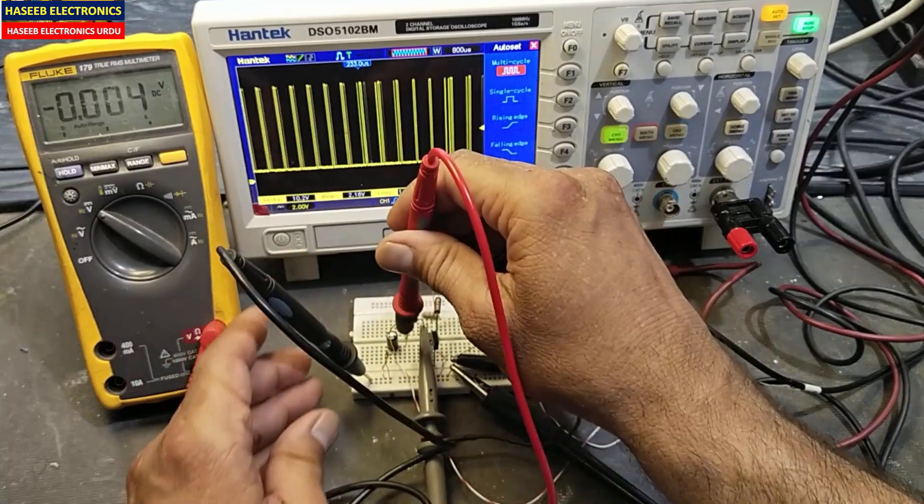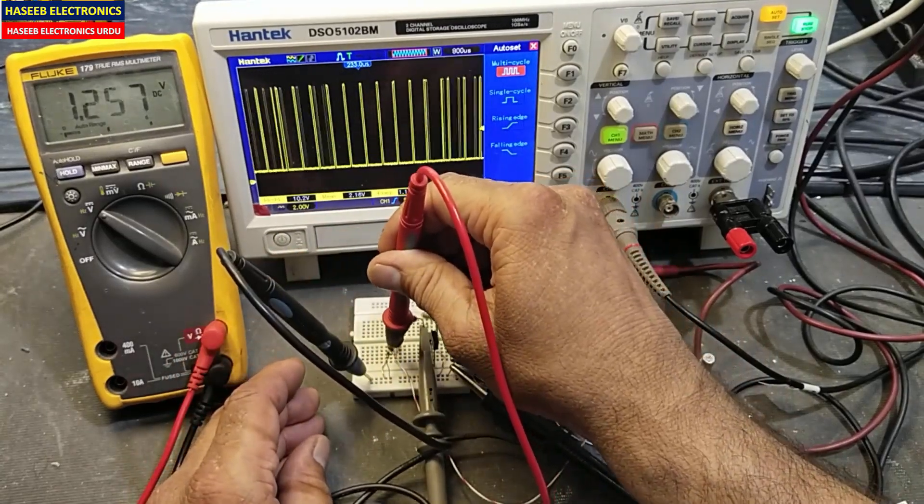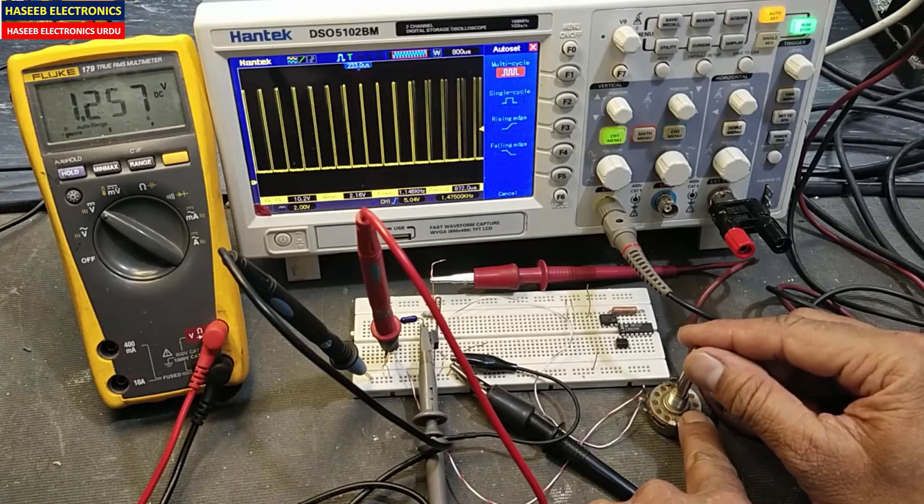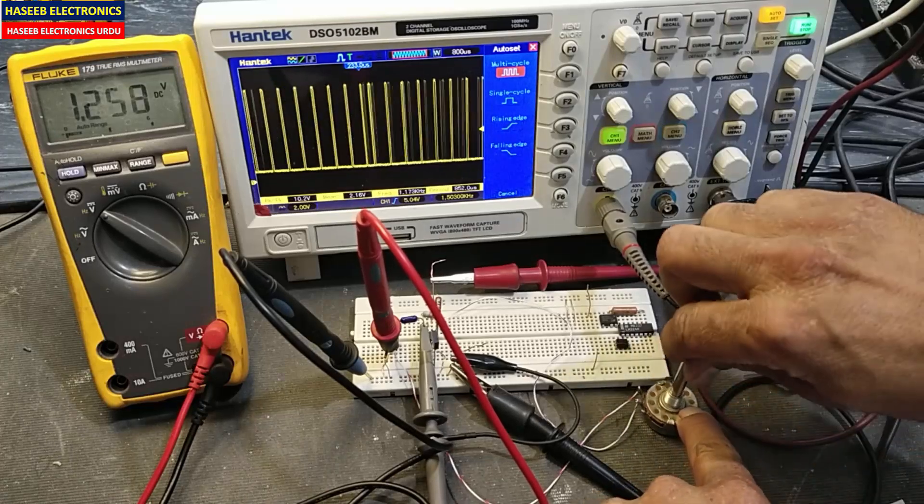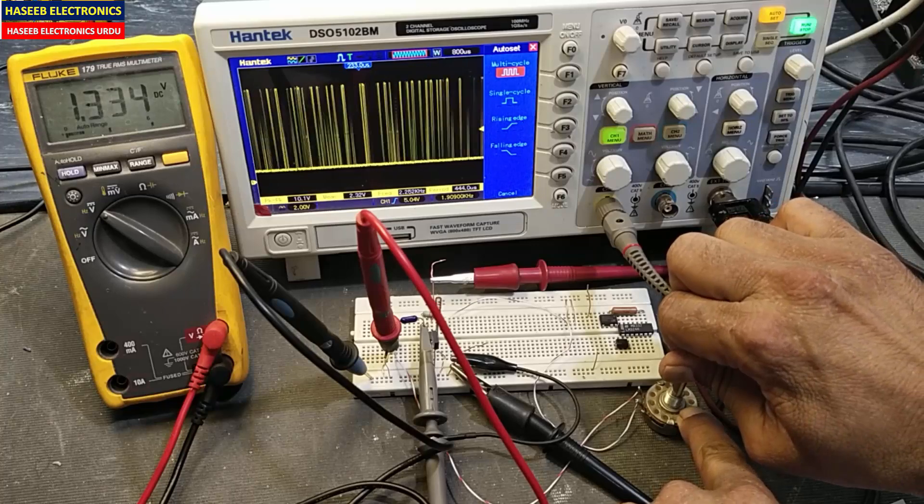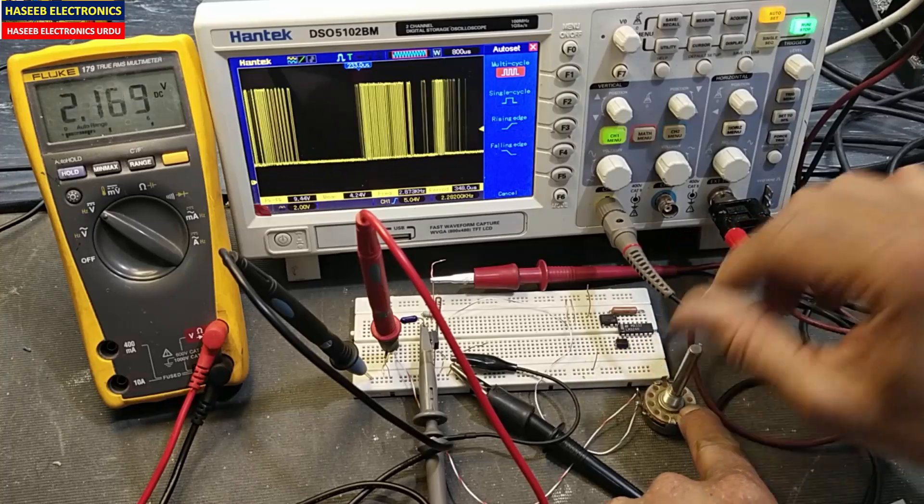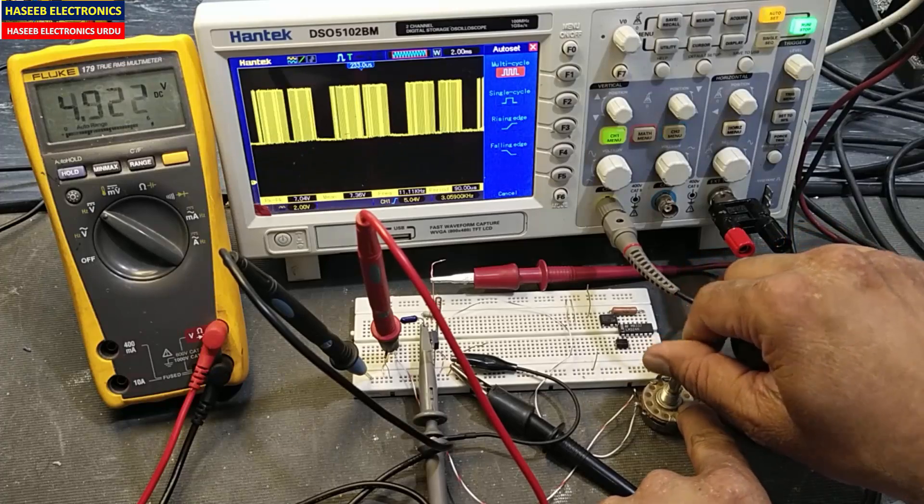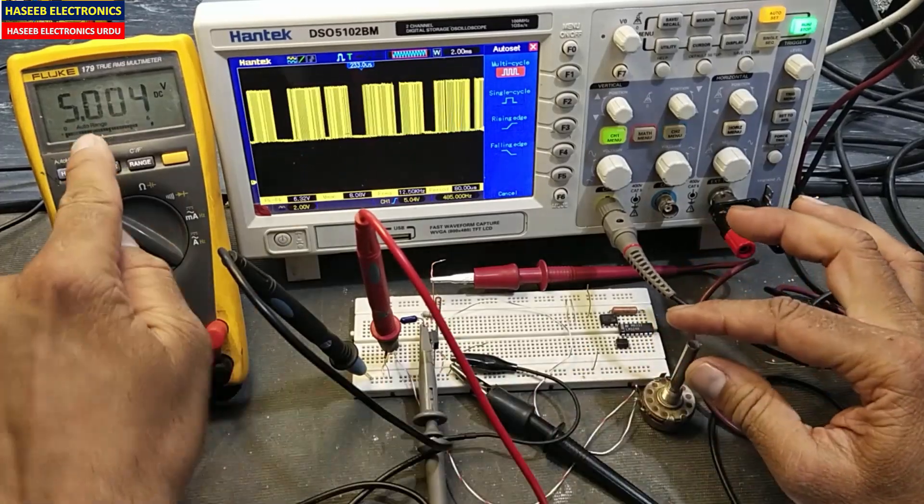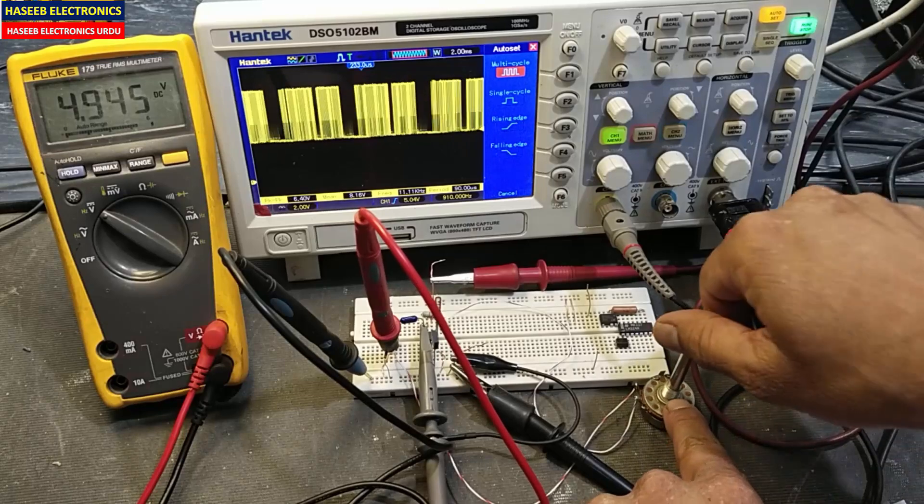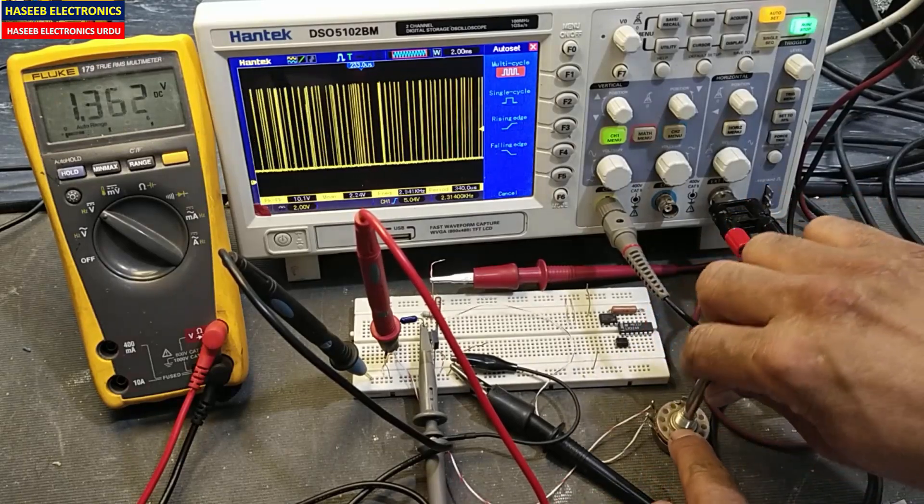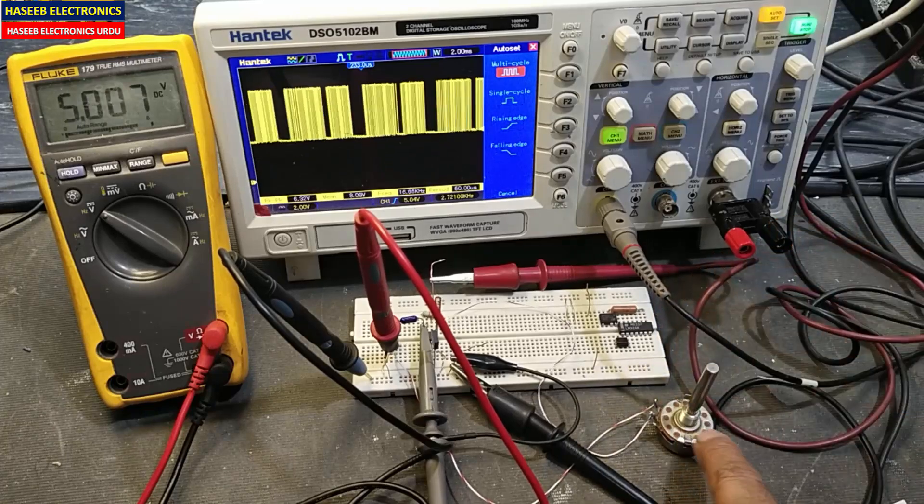I am taking output from this IC from 1.2 volt. Now I am adjusting the potentiometer here, 1.3 volt and we can see I am taking 5 volt. When we adjust it 1.3 volt to 5 volts.